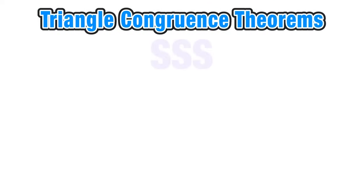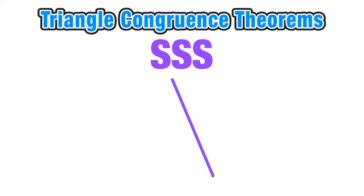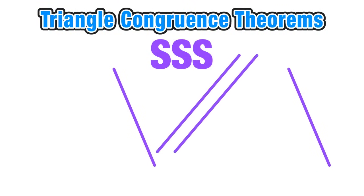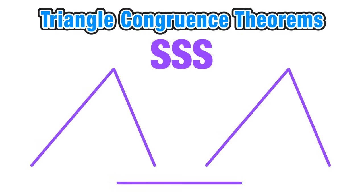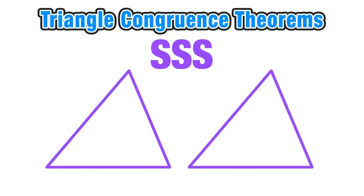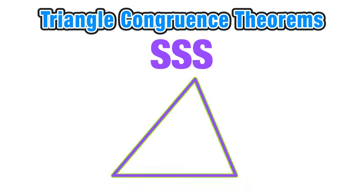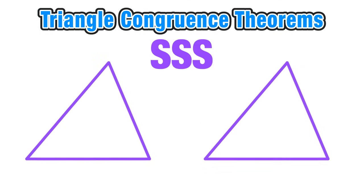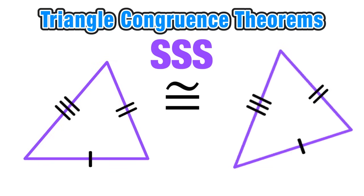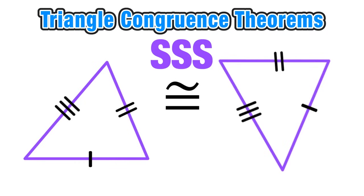The side-side-side triangle congruence theorem states that if in two triangles we have three pairs of corresponding sides that are congruent to each other — meaning they have the same length — then that's enough information to say that the triangles are congruent, which means both triangles are exactly the same size and shape. We can use the side-side-side theorem to conclude the triangles are congruent and that their corresponding sides and angles have the same measure, even if the figures have different orientation.